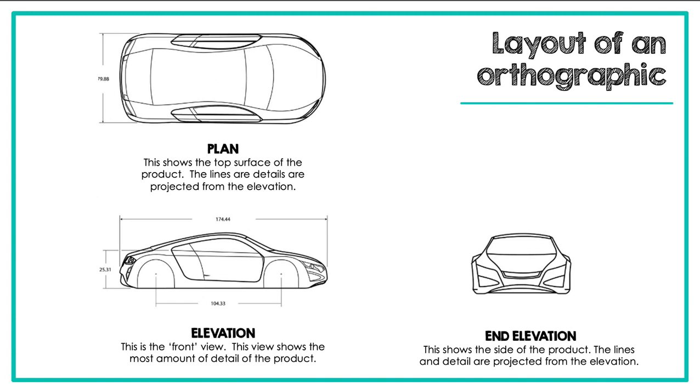Your plan, which is the bird's eye view, the top view, is directly above the elevation. All of the lines from the elevation are projected onto the plan. If I draw a line all the way up here and here, you can see that it's the exact same size. And it's the same with the elevation and the end elevation. If I draw my lines across, you can see that the end elevation was projected from the elevation. So your three sides, three views for an orthographic would be your elevation which is your front view, the plan which is the top view, and the end elevation which is the side view.